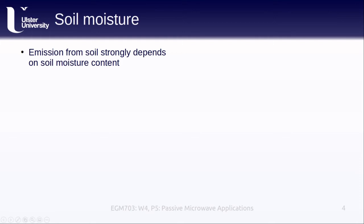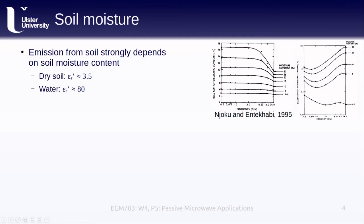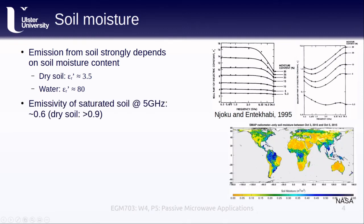The amount of radiation emitted from soil has a very strong dependence on soil moisture content. The real part of the dielectric constant for dry soil, epsilon r prime, is about 3.5, while for water it's over 20 times that at about 80. You can see in the graphs how this varies for different soil moisture percentages — the graph on the left shows how the real part of the dielectric constant varies, while the one on the right shows the imaginary part. From this, we can also see that penetration depth for soil depends on moisture content. Wet or saturated soil has a lower penetration depth than dry soil. The emissivity for saturated soil at about 5 gigahertz for C-band microwaves is about 0.6, while for dry soil it's above 0.9.